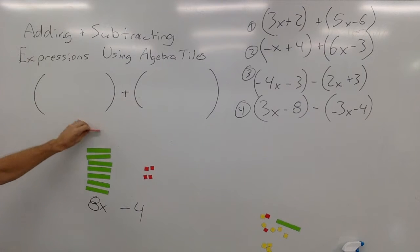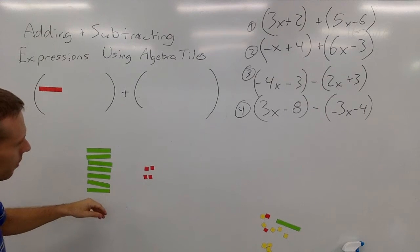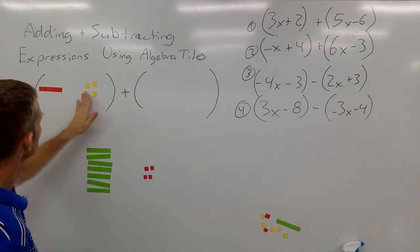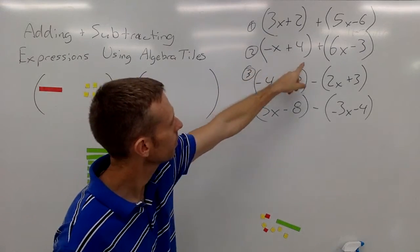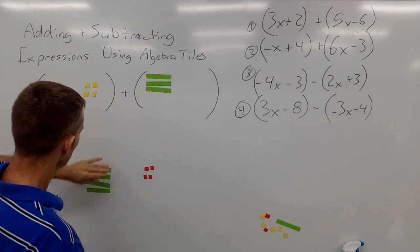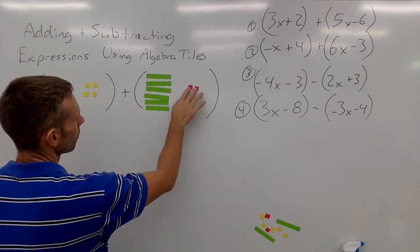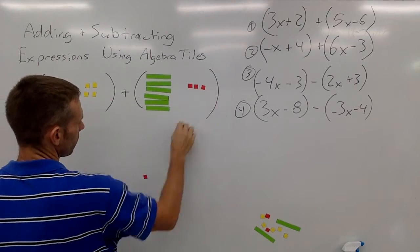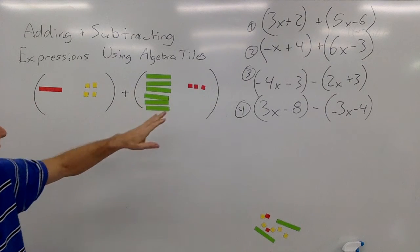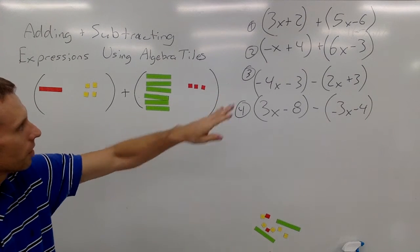Okay, let's try another one. Negative x, negative 1x plus 4, plus 6x minus 3. So negative 1x plus 4, plus 6x minus 3.